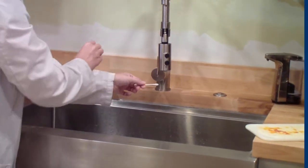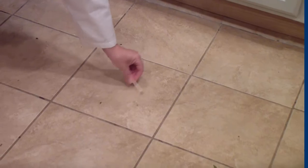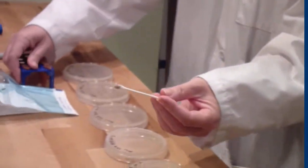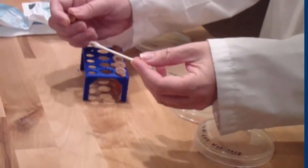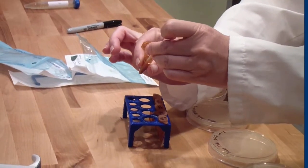Take your swab and moisten it with water and collect bacteria from a kitchen sponge, the floor, or a pet's water bowl. Once you've collected your sample, mix the sample into the TSB tube labeled ten to the negative one. Gently move the cotton swab up and down to mix the sample with the medium, and then discard the swab.